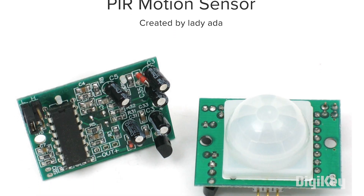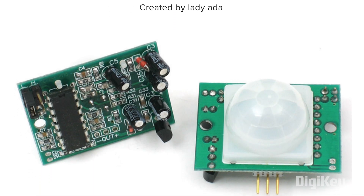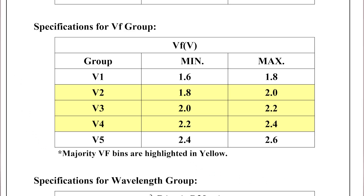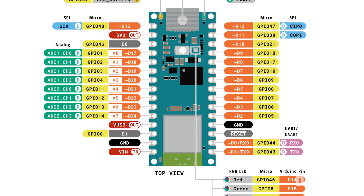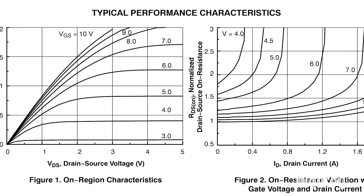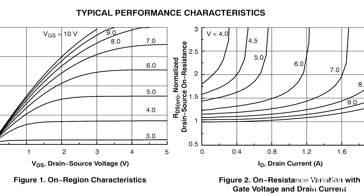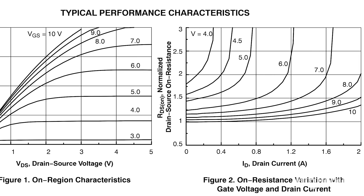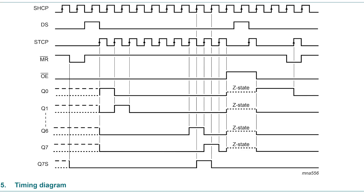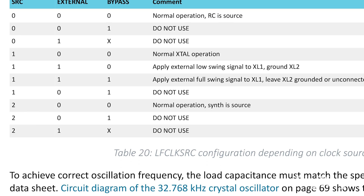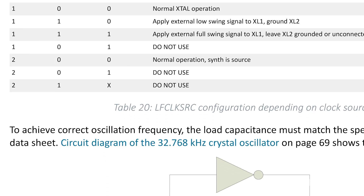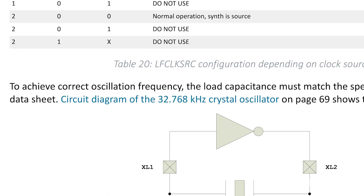Data sheets serve up the important facts about a specific component, such as its electrical characteristics, pin configuration, and physical dimensions. Often you'll also get graphs showing the part's performance under different conditions. More advanced integrated circuits will include timing diagrams, truth tables, or instructions for programming, depending on what's relevant.